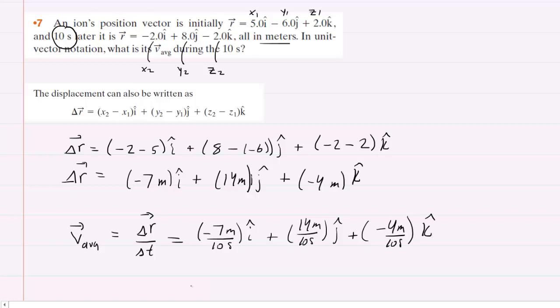And then you just simplify these and this will give you your average velocity vector. So here we'll have negative 0.7 meters per second plus 1.4 meters per second in j-hat, and then you're going to have negative 0.4 meters per second k-hat. And this is our average velocity vector and the correct answer to the question.